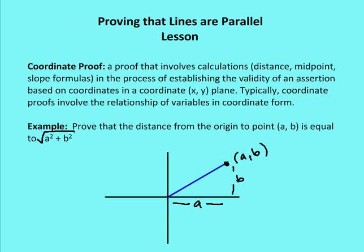Typically, coordinate proofs involve the relationship of variables in coordinate form. So we could say that some points are a and b — not necessarily given values — because we're trying to prove it true for all cases. Regardless of what a and b are, we're trying to show that something is true. So here's an example: prove that the distance from the origin to point (a, b) is equal to the square root of a squared plus b squared.